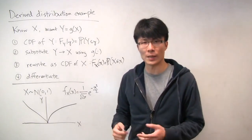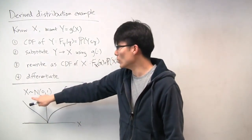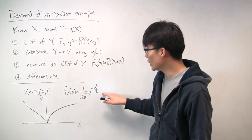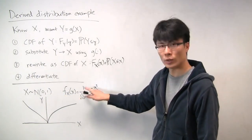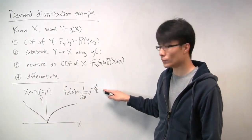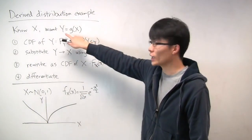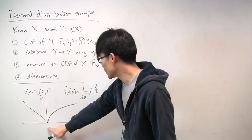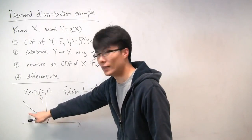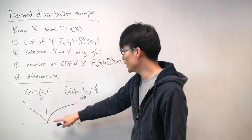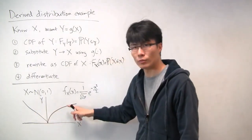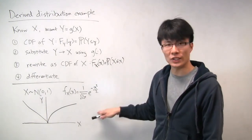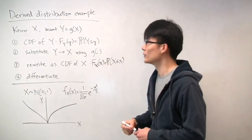Now let's go into our specific example. We're told that x is a standard normal random variable, meaning mean zero and variance one, so we know the form of its PDF: f_x(x) = (1/√(2π)) e^(−x²/2). We're also told the relationship between x and y: if x is negative, then y = −x; if x is positive, then y = √x. This is shown in the graphical representation of the relationship between x and y.